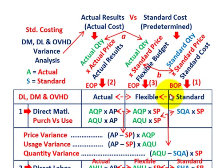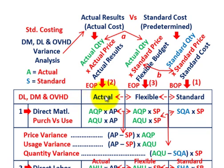When we're doing variance analysis, we really have three different amounts or budgets to look at. Based on our standard costing, we're going to have some standard amount established for our labor, materials, and overhead. Then based on actual results during the period, we determine the actual amount. Knowing our actual amount and our standard amount, we can determine the flexible amount for our variance analysis.